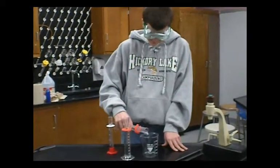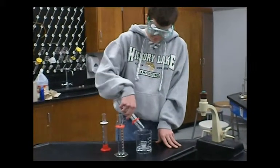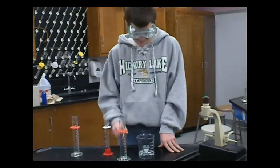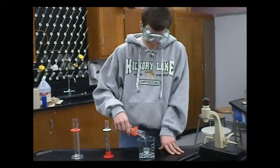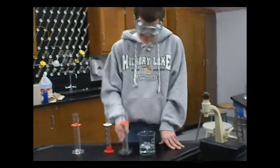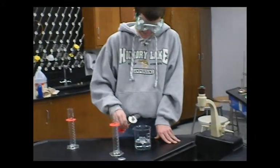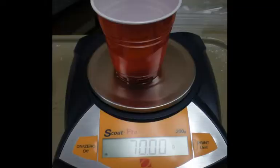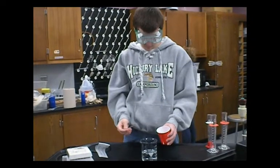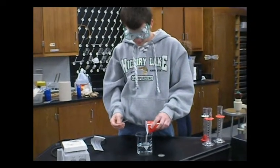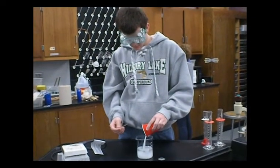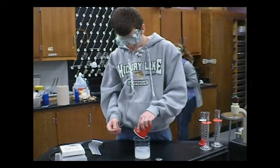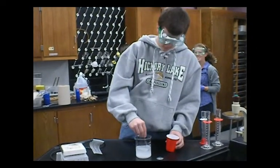Add 250 milliliters of water to a 600 milliliter beaker. Add 70 grams of NaCl to the water, then stir.